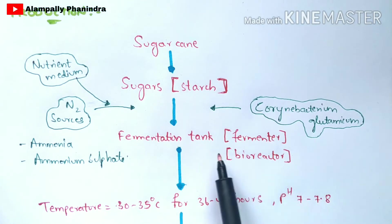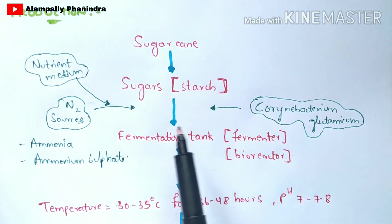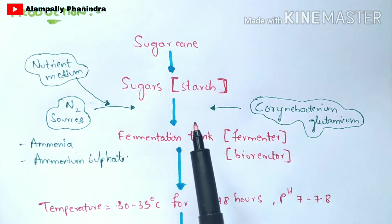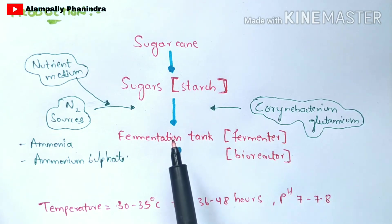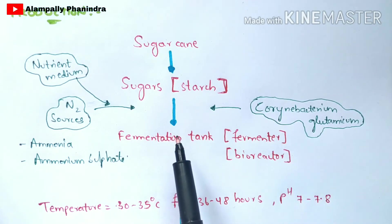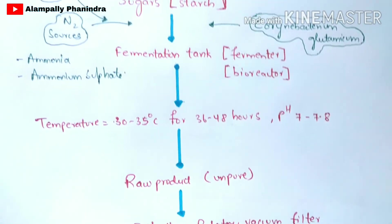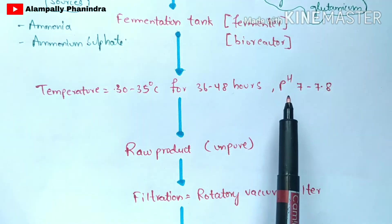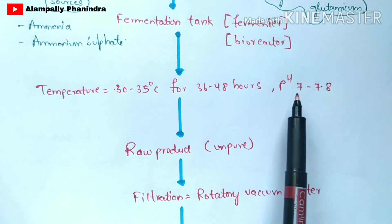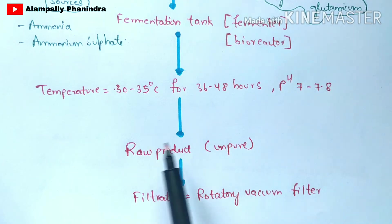You then start the fermentation process. Continuous electricity is supplied via a generator connected to the main board to avoid power cuts. The temperature is maintained at 30 to 35 degrees Celsius for 36 to 48 hours, and the pH should be maintained at 7 to 7.8.